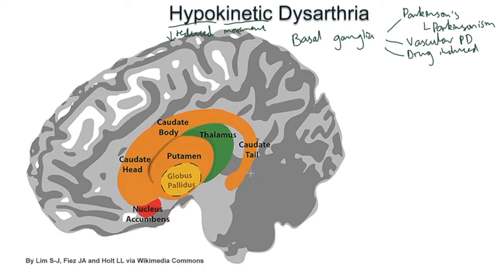The basal ganglia are a group of different parts deep in the brain. They help with — and are actually essential for — voluntary movement. They have a loop between themselves and the motor cortex, going via the motor cortex rather than directly feeding signals down. They take sensory information via the thalamus on what the body's currently doing and the environment, and based on that, they either increase or decrease the motor movement signals.